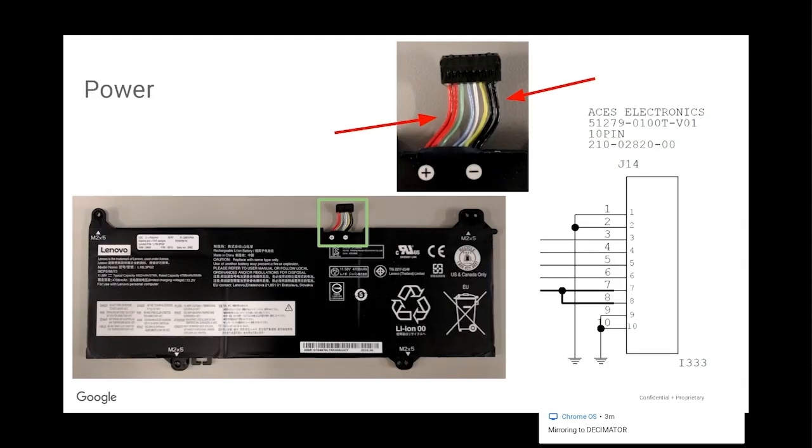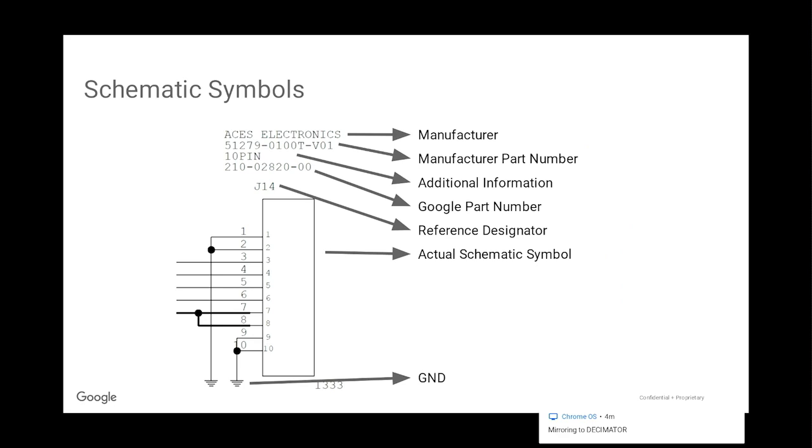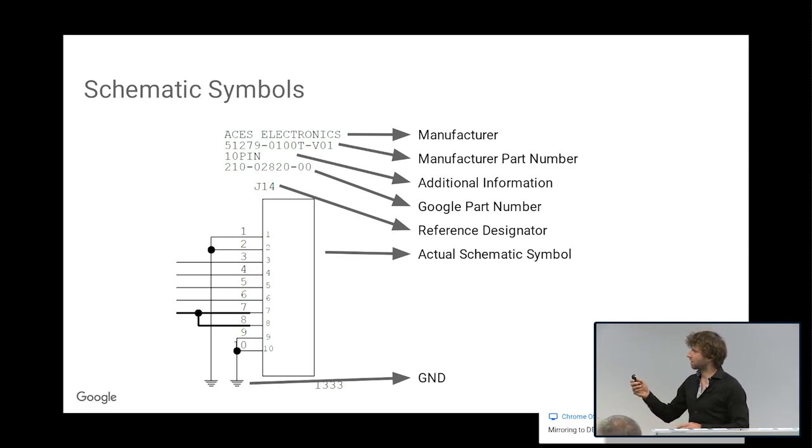On the right, that's the schematic equivalent. It doesn't look like a battery at all because we're not actually putting a battery in the schematic, we have a connector that connects to the battery. You'll see things like the manufacturer, the part number, the number of pins. We have a Google part number, which is a part number we use to track all this information in an extremely slow database at Google.